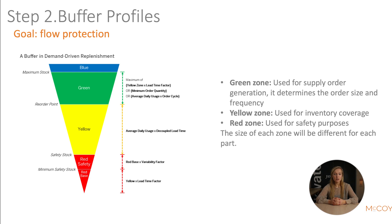Step two: buffer profiles. The goal of the buffer profiles is stock absorption so it can mitigate in both directions. A three zone color-coded buffer is used. In contrast to MRP, DDMRP never nets to zero, meaning there is no safety stock, following the philosophy that safety stock causes the bullwhip effect. The stock is composed of layers, and if you reach the yellow layer you should order again. The size of each zone will be different for each part — for example, with more demand variability the red zone will be bigger, and the replenishment quantity, which is the green zone, is dynamic too.